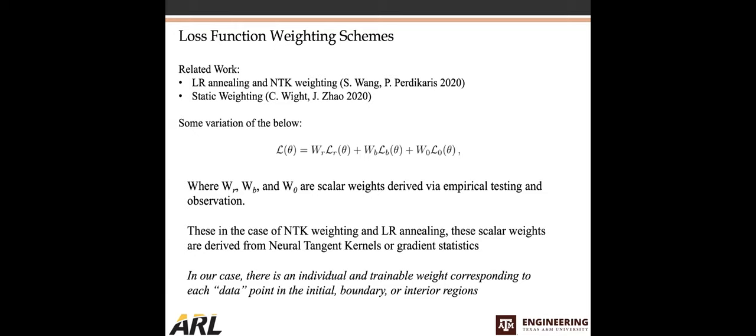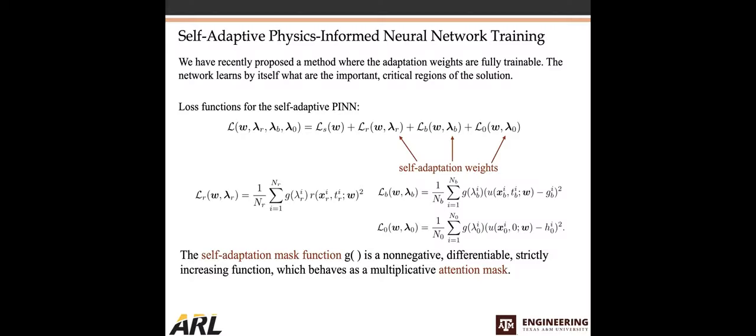But in our case, there's an individual and trainable weight corresponding to each data point. And so in this case, data points can be residual points inside the domain. So if you have 10,000 residual points, you would have 10,000 weights associated with those. 200 boundary points, you would have 200 boundary point weights. And if you go through and individually weight each of those points and make each of those individual weights trainable, how would that affect the solution? And so that's what we've done. And that's our major contribution with this particular work and with this paper is this self-adaptive training mechanism.